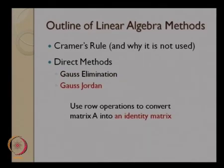The next method we talked about was Gauss-Jordan method. In Gauss-Jordan method, we use row operations to convert the matrix A not into an upper triangular matrix, but into an identity matrix. Whatever is left of the matrix B in the juxtaposed matrix AB is going to be the solution X.